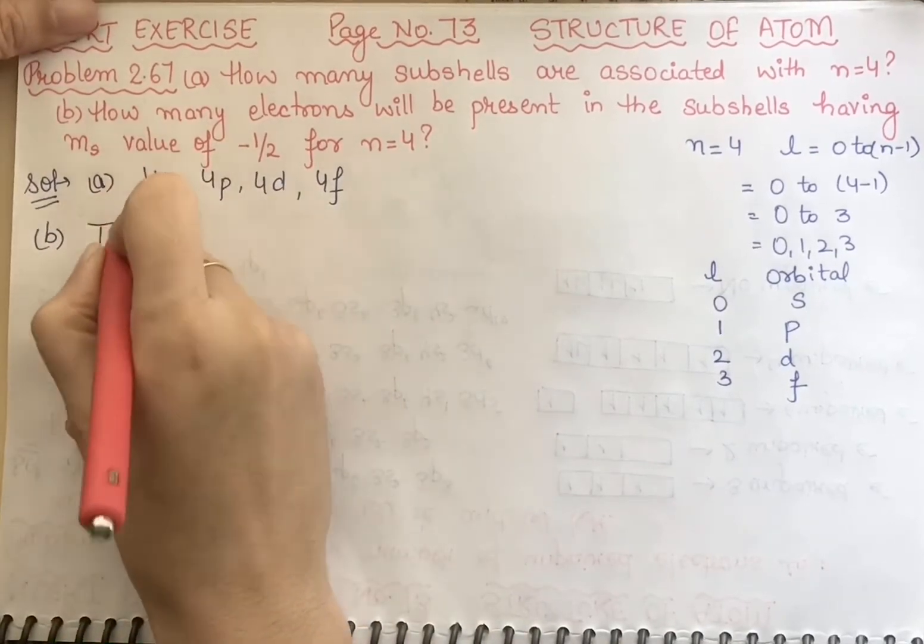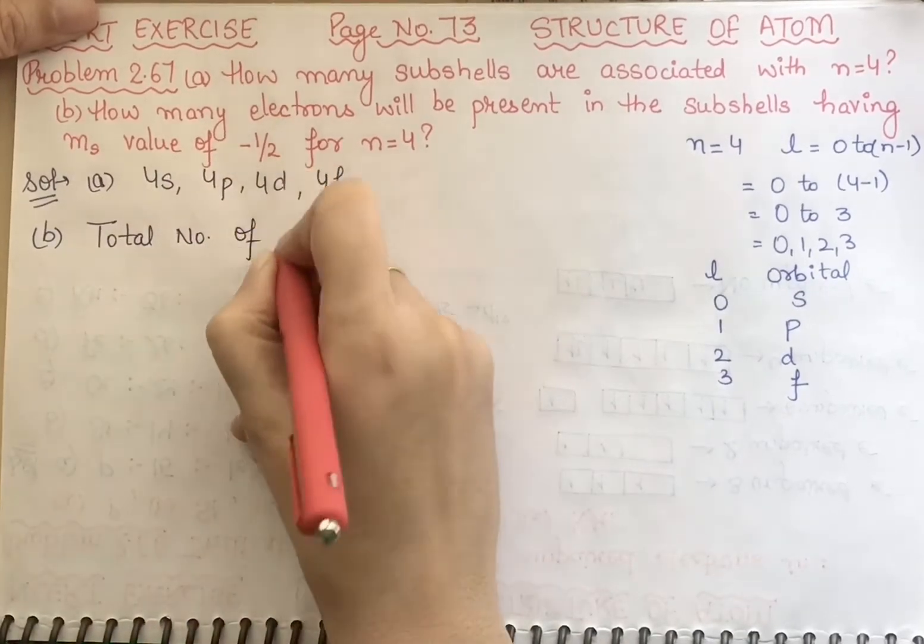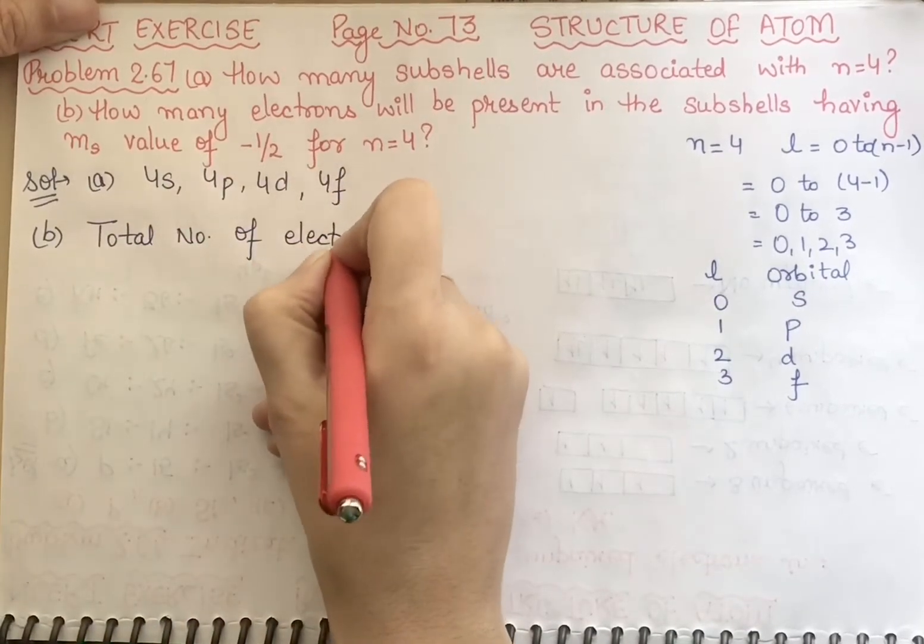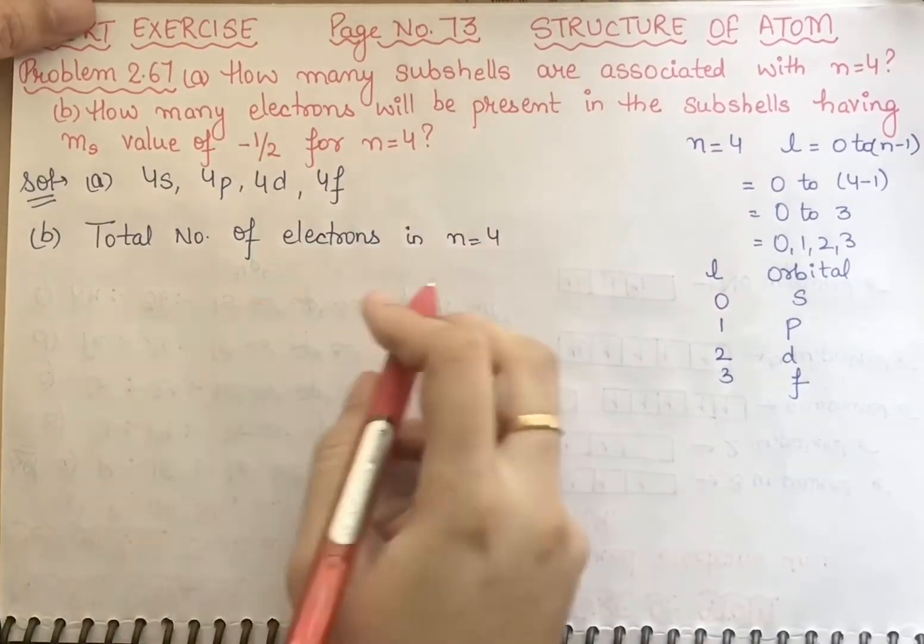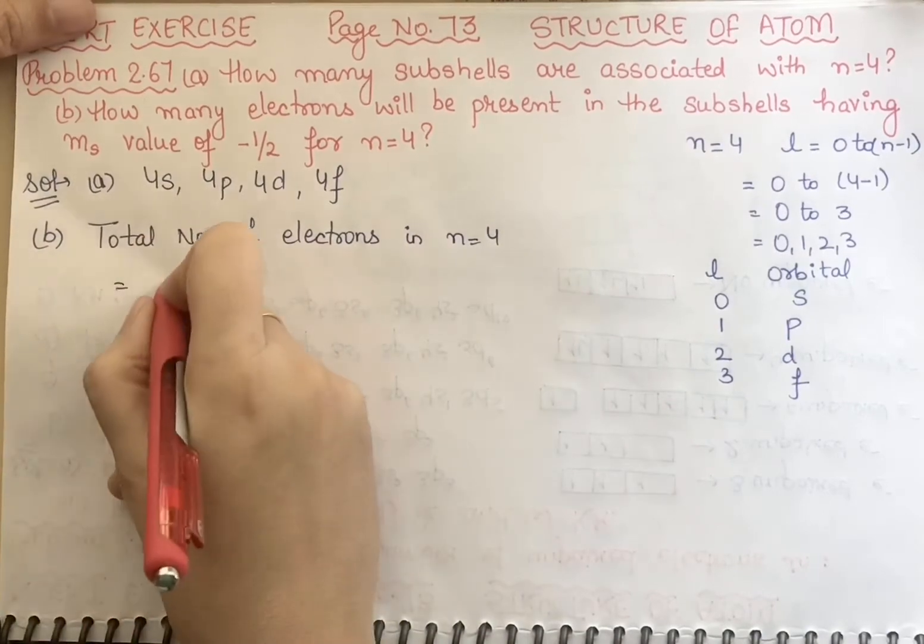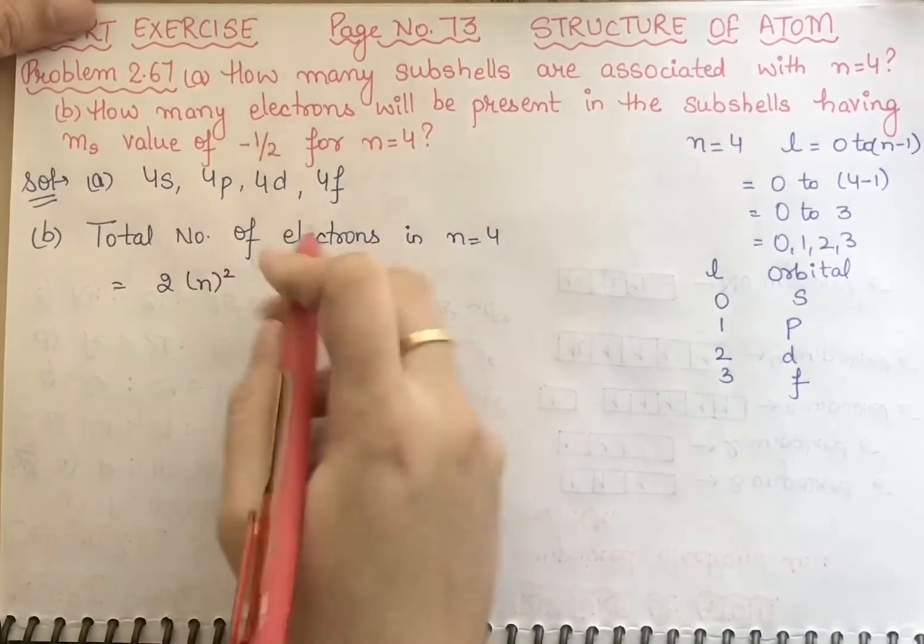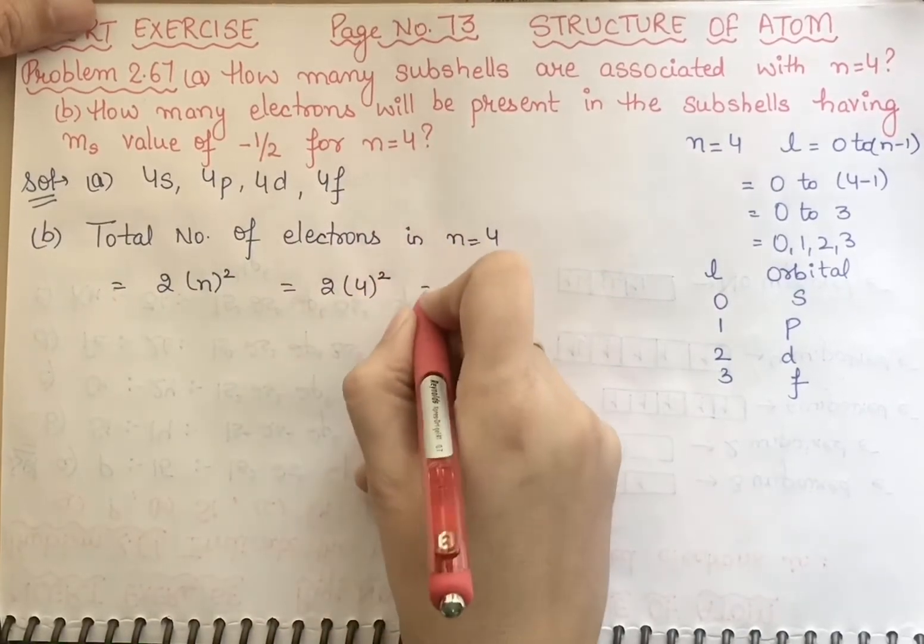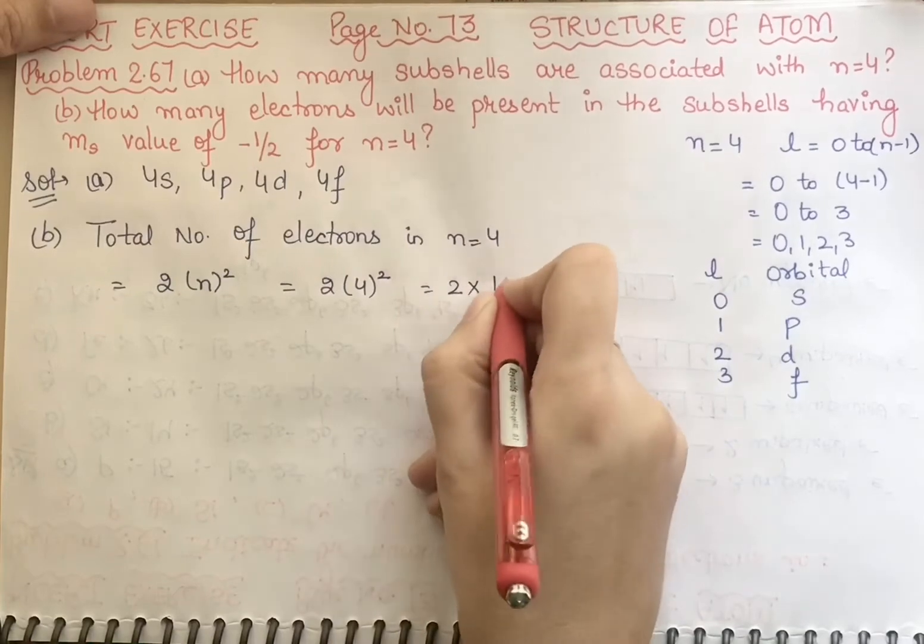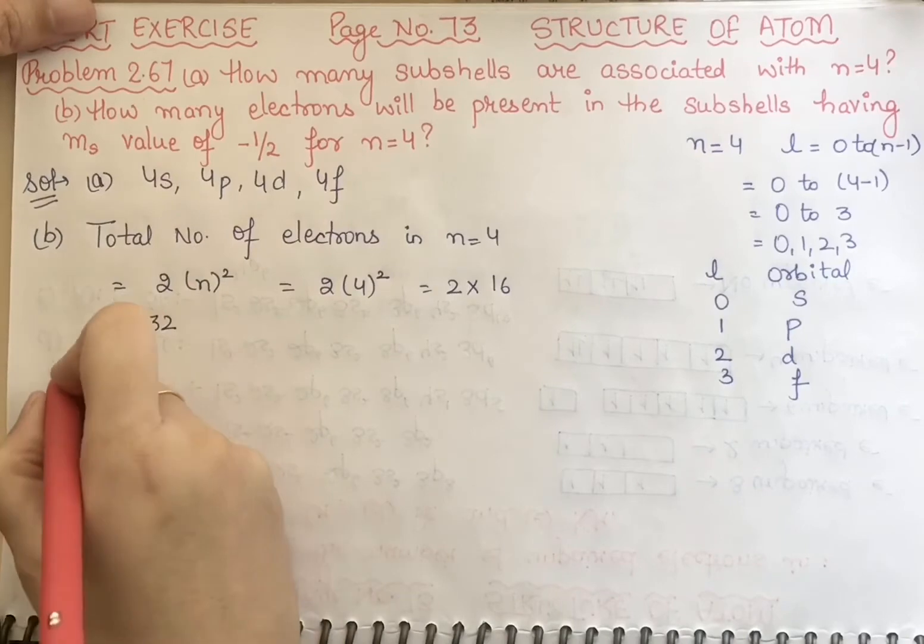First of all, let's see the number of electrons. Total number of electrons in n equal to 4 must be 2n square. 2n square, what have you done? 4 square, so 2 into 16, that means 32. Now how are 32 electrons coming, I'll show you.